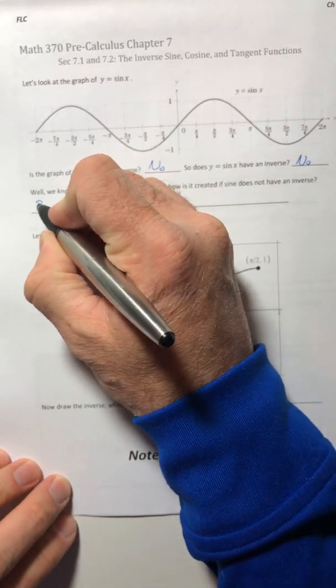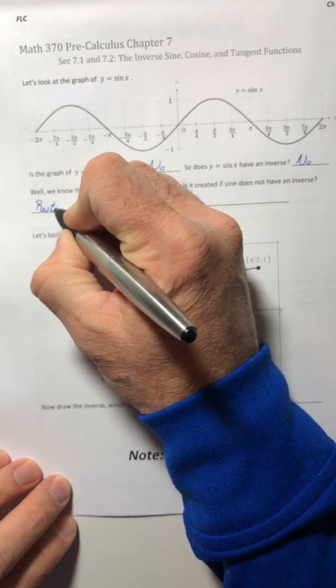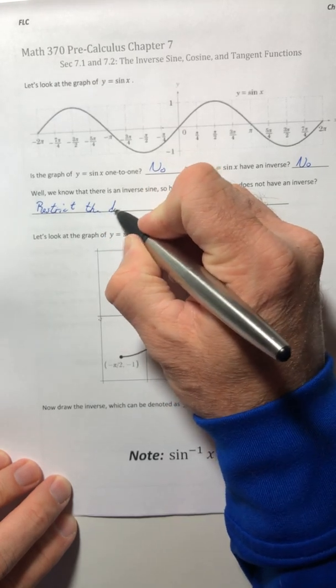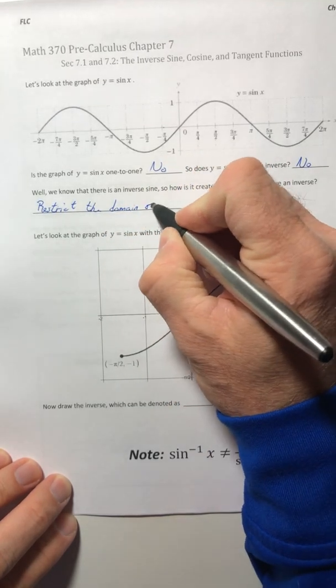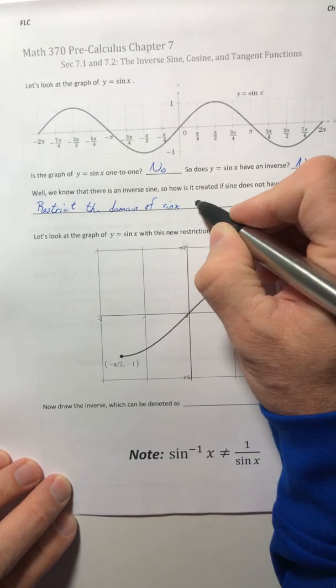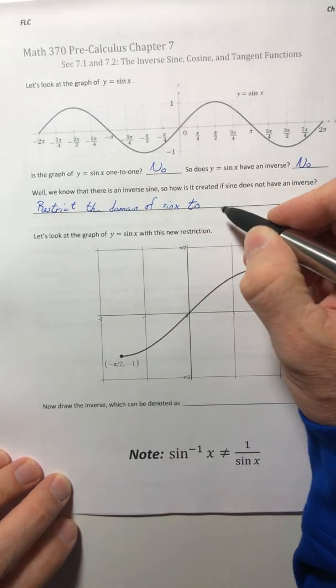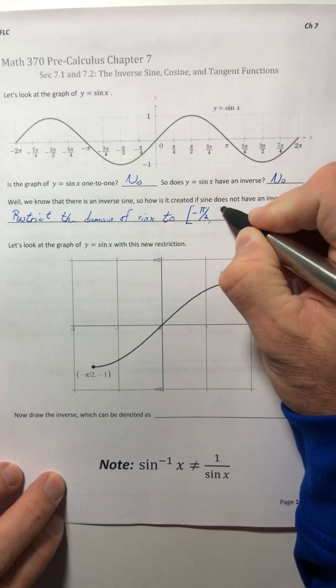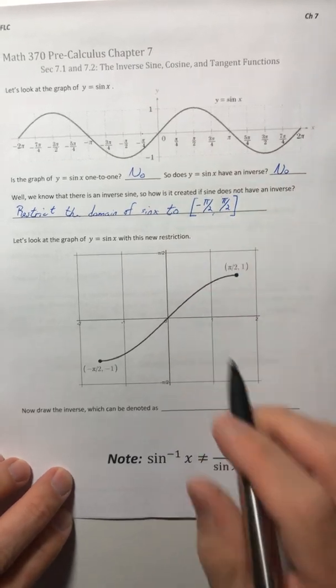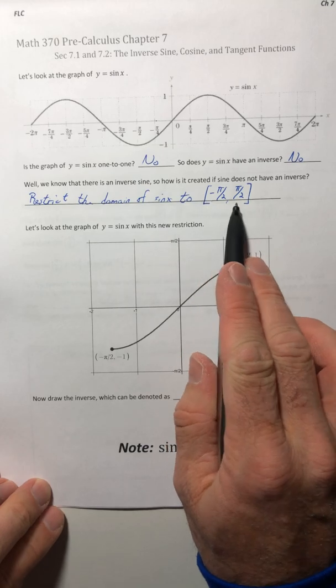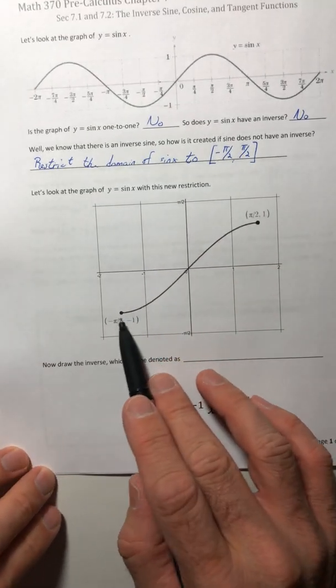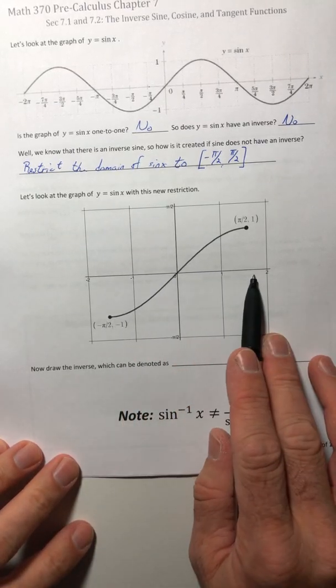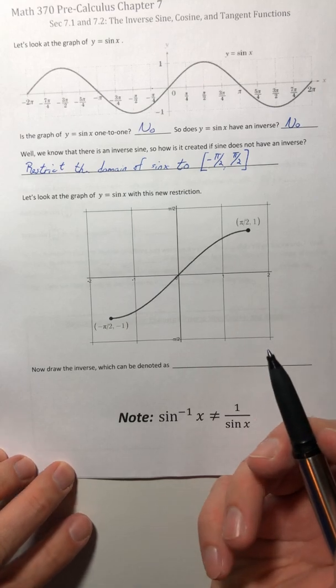If we restrict the domain of sine, if we restrict it to the closed interval from negative pi over two to pi over two. So we're only going to look at this section of the curve. So that's what this is right here. So this is the graph of sine with that new restriction. There's negative pi over two to pi over two. So now it does definitely pass the horizontal line test.